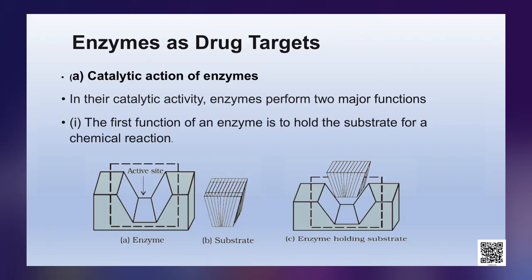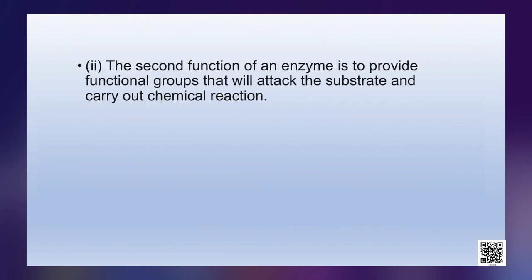Substrates bind to the active site of the enzyme through a variety of interactions such as ionic bonding, hydrogen bonding, van der Waals interaction, or dipole-dipole interaction. As you can see in the picture, figure (a) shows the active site, figure (b) shows the substrate, and figure (c) shows the substrate binding with the enzyme.